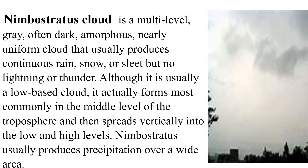Nimbostratus cloud is a multi-level, gray, dark cloud that usually produces continuous rain, snow, or sleet, but no lightning or thunder. Although it usually has a low base, it actually forms most commonly in the middle level of the troposphere and spreads vertically. Nimbostratus usually produces precipitation over a wide area — rain starts to fall.